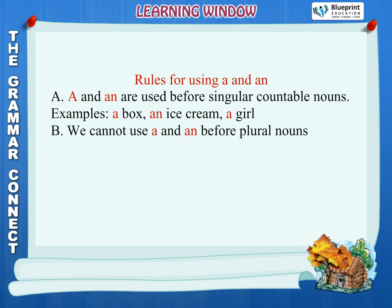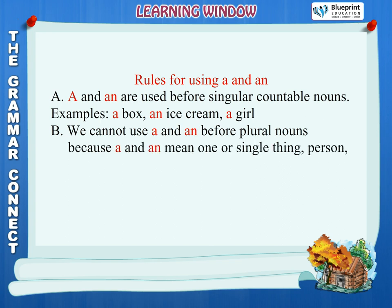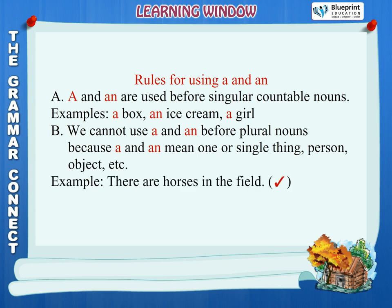Rule B: We cannot use a and an before plural nouns, because a and an mean one or single thing, person, object, etc. Example: 'There are horses in the field.' (Right) vs. 'There are a horses in the field.' (Wrong).